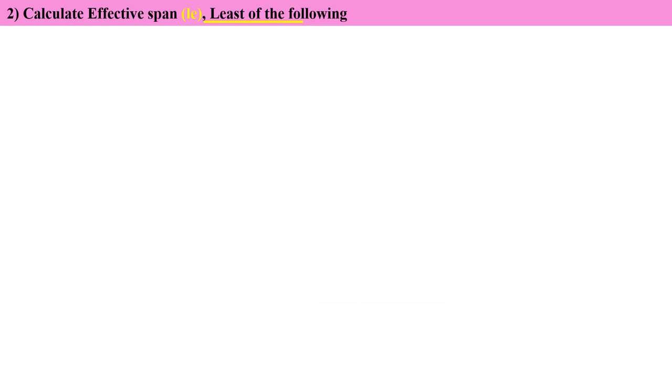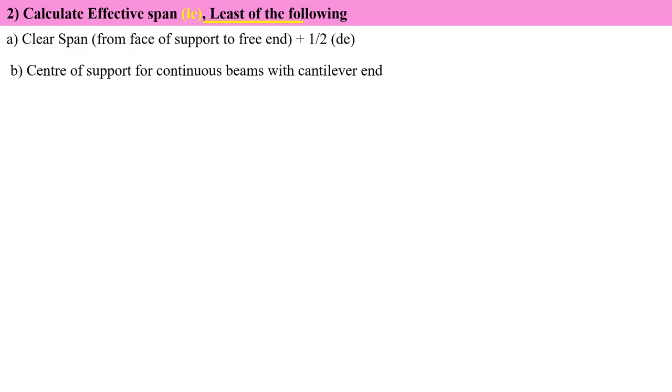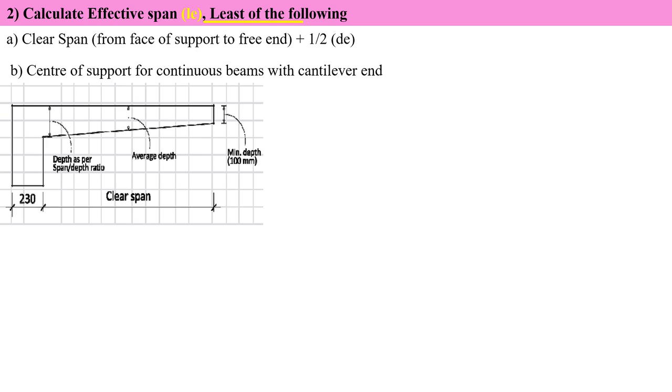Calculate the effective span, LE. We have basically two different conditions. Let's understand with the diagram. This is the cantilever slab which we need to design. The first condition says I need to choose clear span plus half of the effective depth.